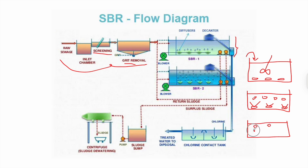In the settling stage, the flocs form a sludge layer at the bottom — an activated sludge layer. It is called 'activated' because it is full of starving bacteria that consume BOD and organic matter, resulting in a high reduction of organic content in the wastewater.